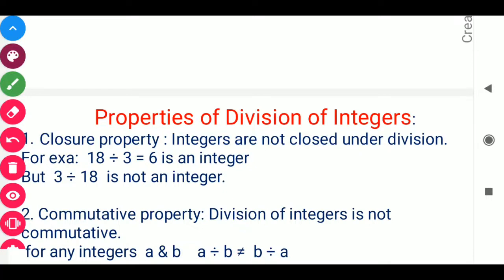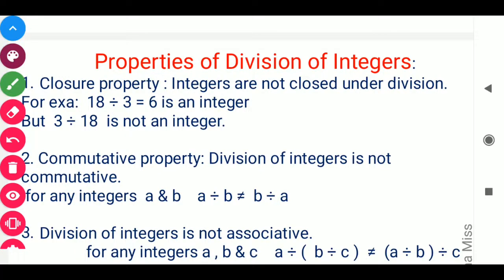Moving to properties of division of integers. Division is one of the important arithmetic operations. For the closure property: integers are not closed under division. For example, 18 divided by 3 equals 6, and 6 is an integer. But when you divide 3 by 18, the answer is a fraction, which is not an integer.